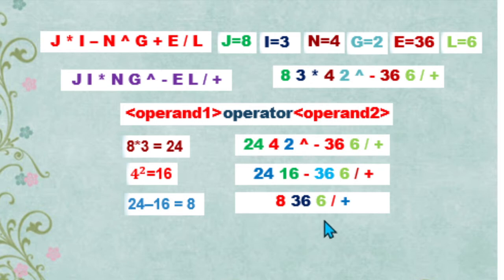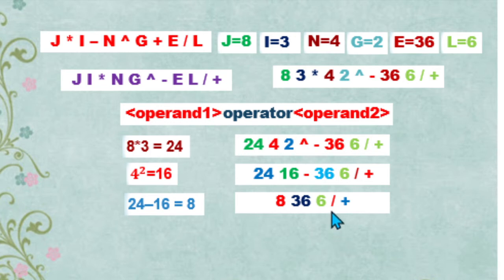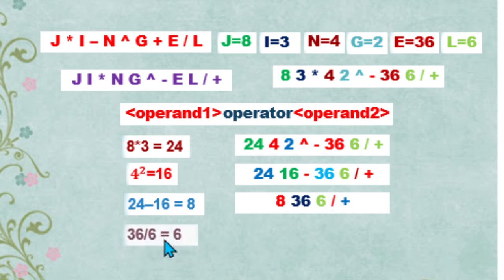Our expression now is 8, then 36, 6, division operator, and addition operator. We scan again and find the division operator as our first operator. The immediate two operands to its left are 36 and 6. So 36 is operand 1 and 6 is operand 2. We perform division: 36 divided by 6 is equivalent to 6.